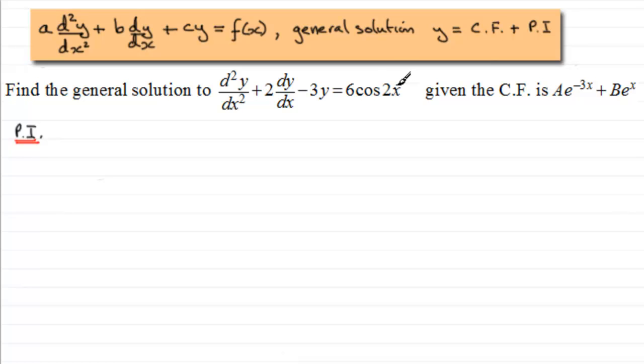Then whether it's 6cos2x or even 6sin2x, then the particular integral that we use is to let y equal any constant, let's say lambda, then we have cos2x.